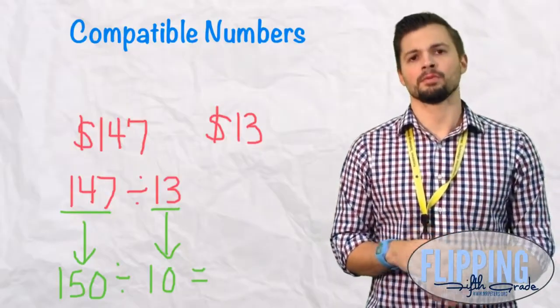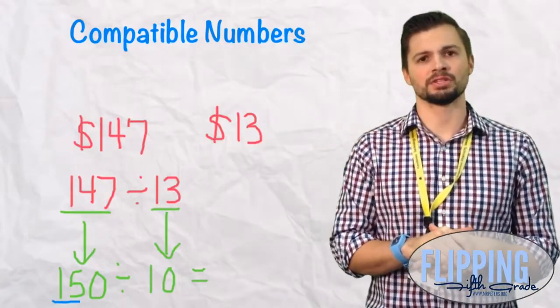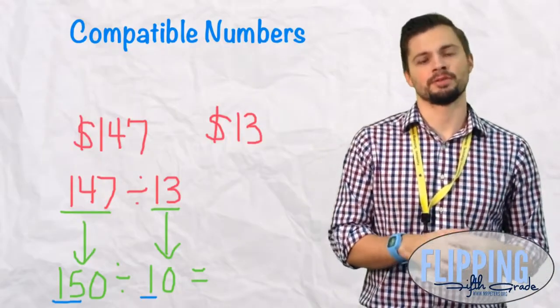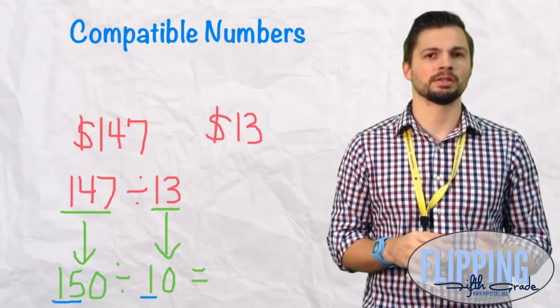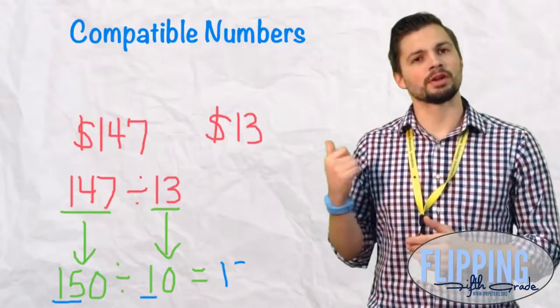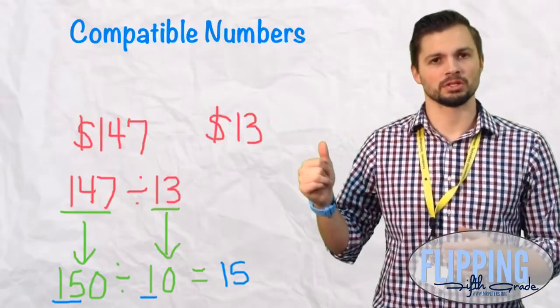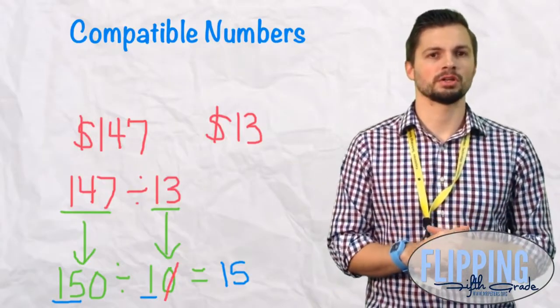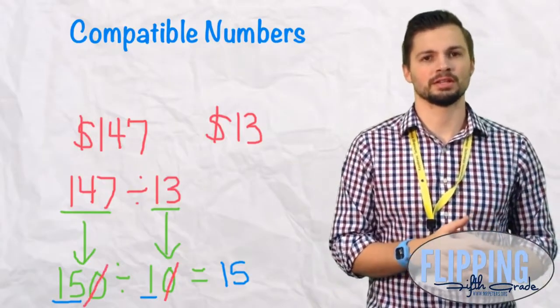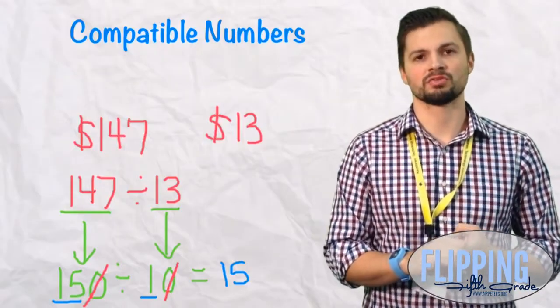Now we set up the 150 divided by 10. We underline our non-zero digits to give us our basic fact of 15 divided by 1. Now we know 15 divided by 1 is 15, so we write our 15 down. The next thing we can do is we can look at the zeros. Start with the divisor. The divisor has one zero, so does the dividend. So we can cross off those zeros. Therefore, our answer is just 15.